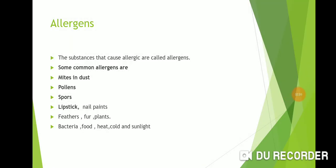What is the allergen which causes allergy? The substances that cause allergy are called allergens. The substance due to which allergy occurs is called an allergen. Some common examples of allergens which cause allergy are given here.